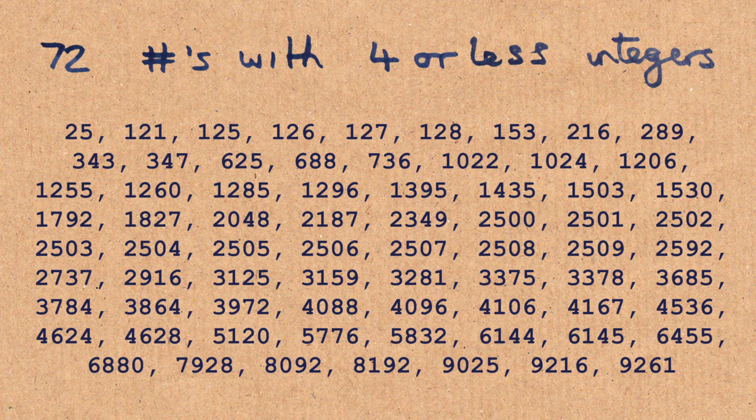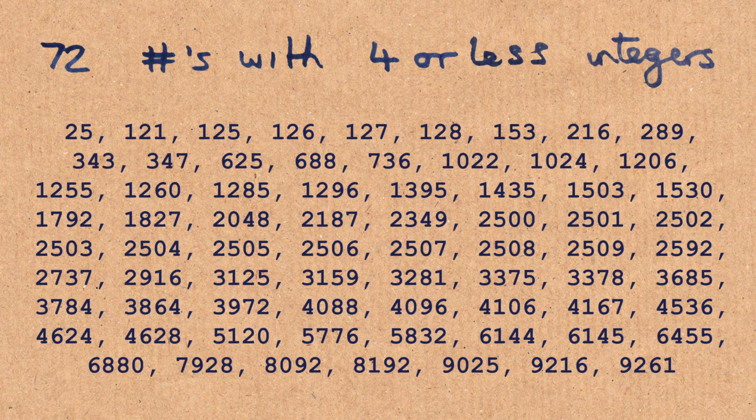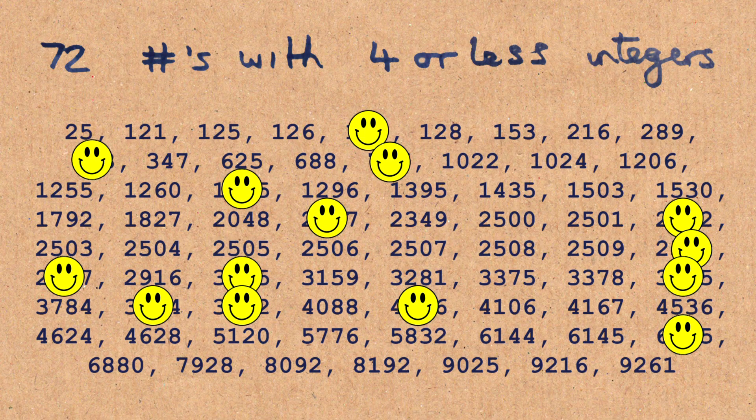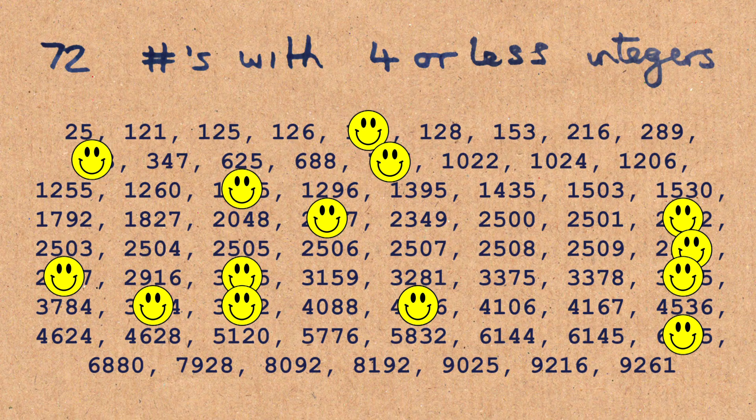And there's a really nice sort of subset of them. 14 of these are known as nice Friedman numbers. Well, a nice Friedman number is where the order of the digits remains the same.